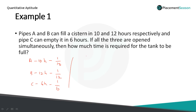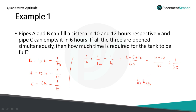Since A and B are inlet pipes, we add their work. Since C is an outlet pipe emptying the cistern, we use 1/6 as negative. Taking LCM of 10, 12, and 6, which is 60, we get 6 + 5 − 10 = 1. So the combined one-hour work is 1/60. Therefore, it takes 60 hours to fill the cistern if all three pipes are opened together.